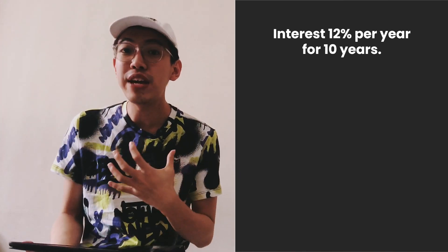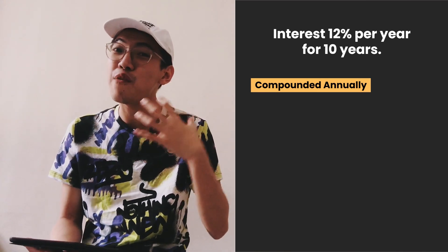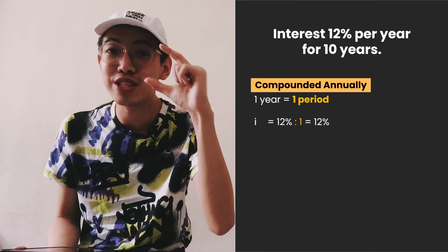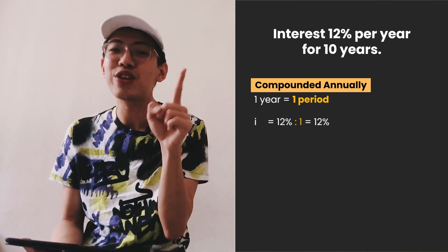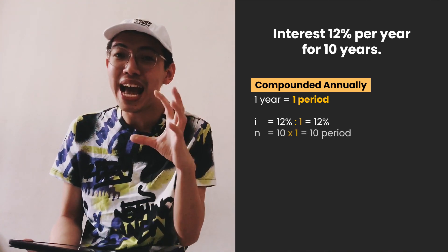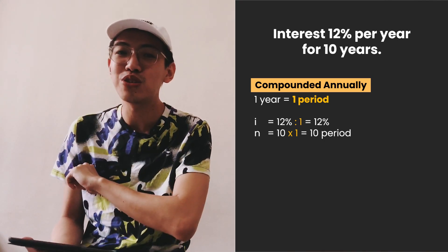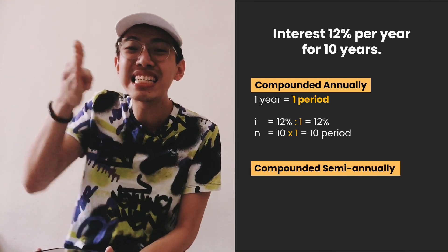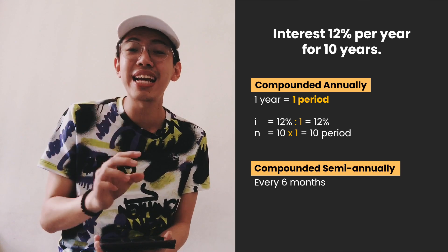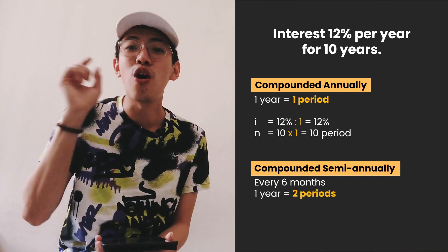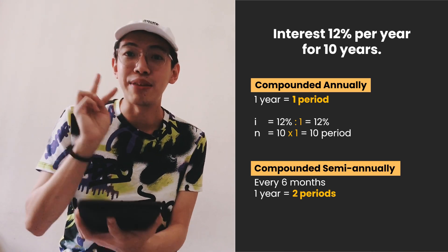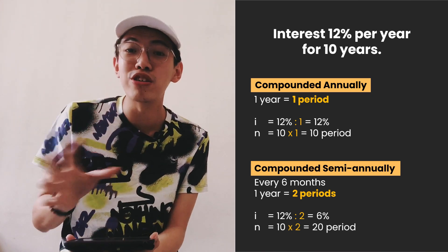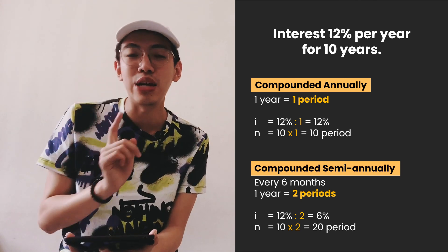For example, with 12% per year for 10 years: if compounded annually, one year equals one period, so i = 12% ÷ 1 = 12% and n = 10 × 1 = 10 periods. If compounded semi-annually (every six months), there are two periods per year, so i = 12% ÷ 2 = 6% and n = 10 × 2 = 20 periods.